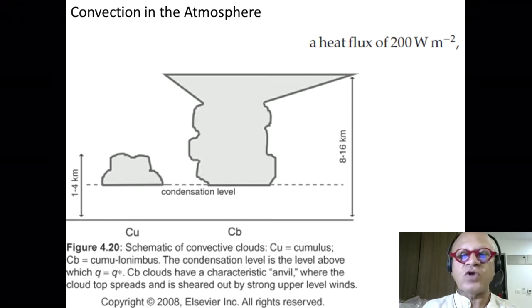Heat flux of 200 watts per meter squared is the estimate in the book in the experiment they show. Here is a good schematic of the two main types of convection we see: the cumulus convection and the cumulonimbus convection.